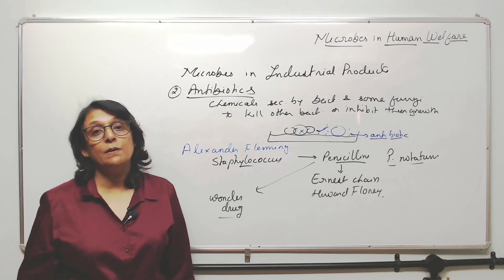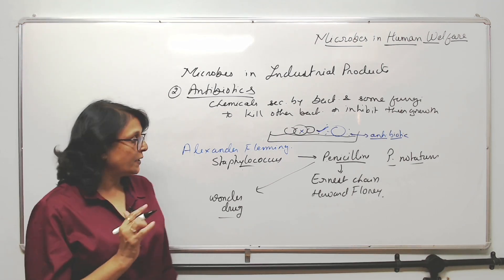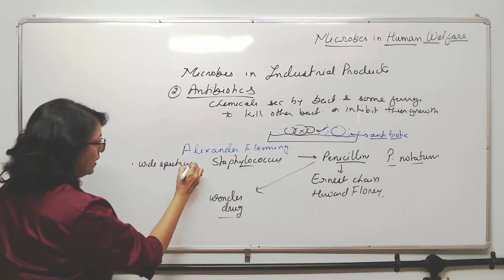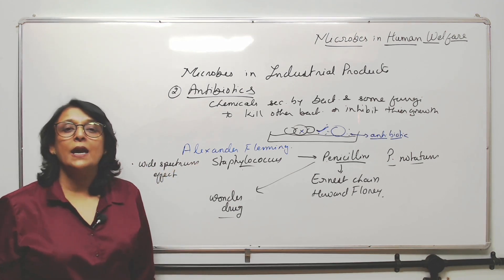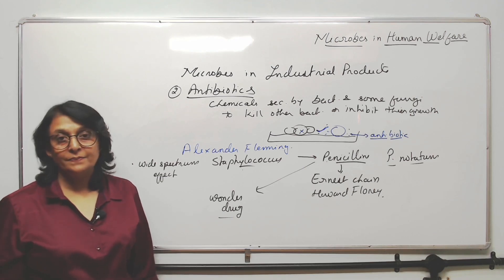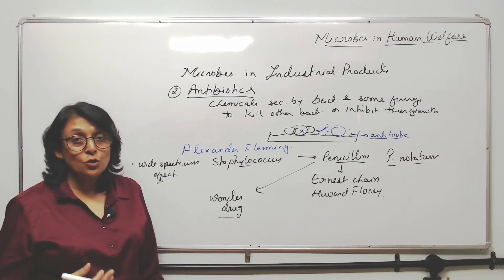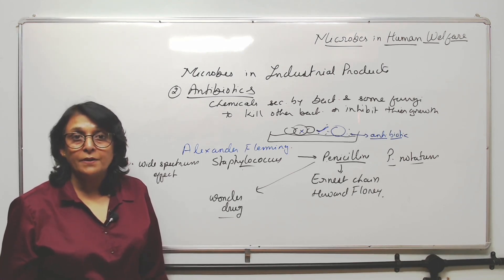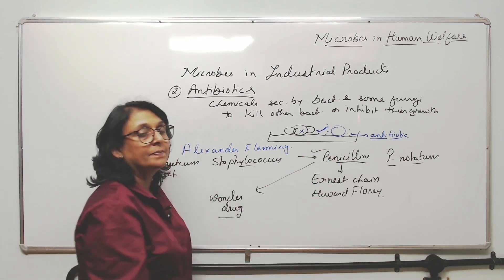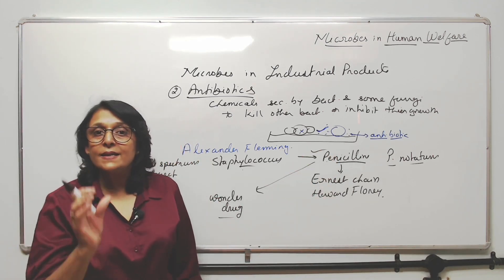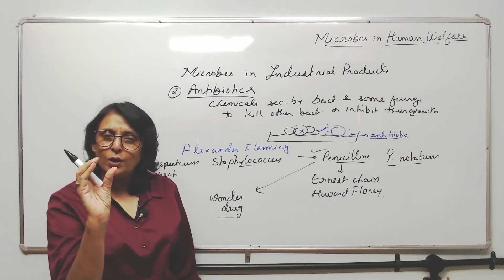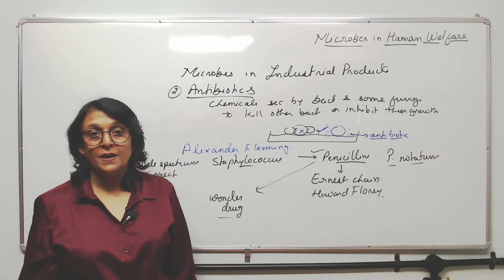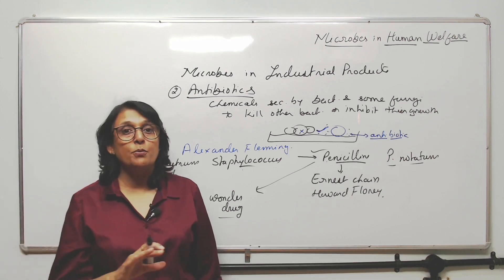Nowadays we use the term wonder drug for all antibiotics. Now, which antibiotic can be used as a medicine? It should have some properties. For example, it should have a wide spectrum effect — meaning one antibiotic can be used to treat multiple diseases. All the antibiotics we use, like streptomycin, erythromycin, and tetracycline, are all broad spectrum. There is only one exception — penicillin is a narrow spectrum; it is used to treat only a few diseases, but for those diseases it is very effective.